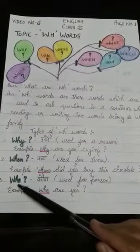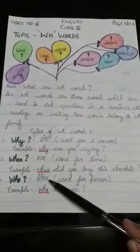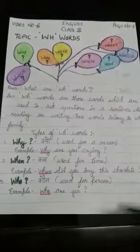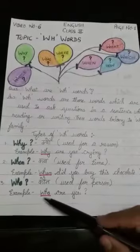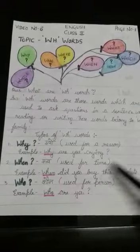Number three is W-H-O, who. Hindi meaning is kaun, used for person. Example: Who are you? Come to next page.